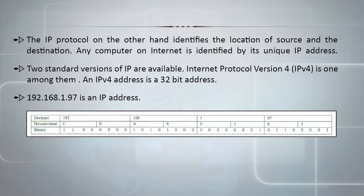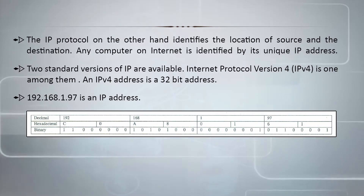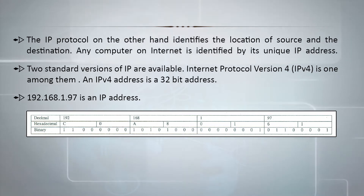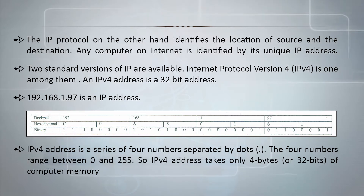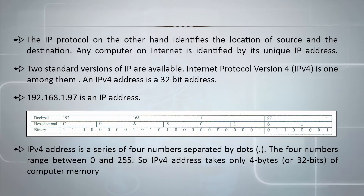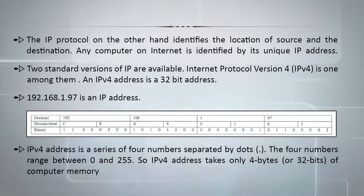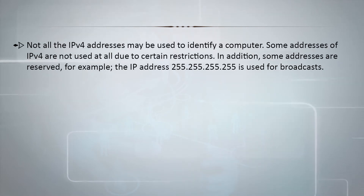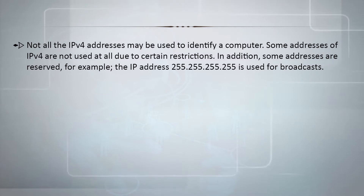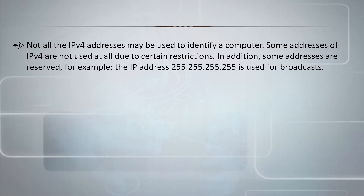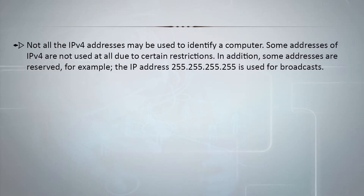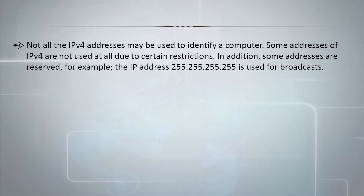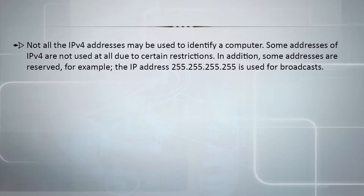An IPv4 address is a 32-bit address. For example, 192.168.1.97 is an IP address. IPv4 address is a series of four numbers separated by dots, with each number ranging between 0 and 255. An IPv4 address takes only 4 bytes, that is 32 bits, of computer memory. Not all IPv4 addresses may be used to identify a computer; some addresses are restricted and some are reserved. For example, the IP address 255.255.255.255 is used for broadcasts.